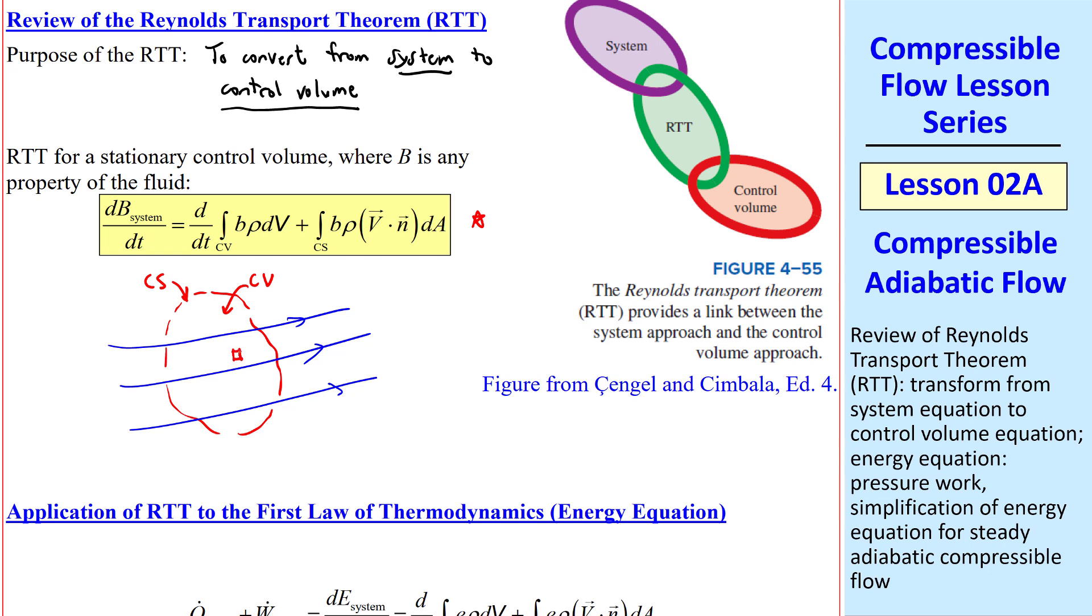This control volume is stationary, but flow can be moving through it. Consider some little element of area, dA. We'll let n be the unit outward normal of that area, and vector v is the velocity flowing through that area. And this v dot n term represents inflow or outflow of property B.